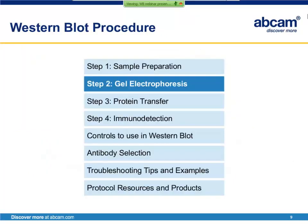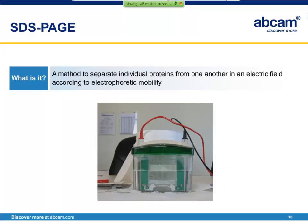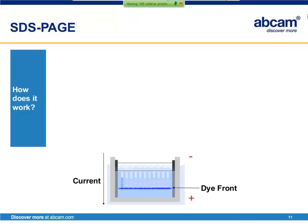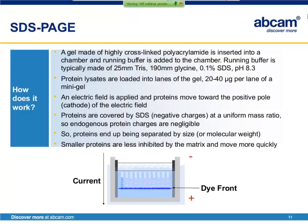Once the samples are properly prepared, they're ready for gel electrophoresis. Gel electrophoresis is used to separate proteins according to molecular weight — we're separating the proteins in an electric field, taking advantage of the fact that different sized proteins will move through a gel matrix at different rates. This image shows a typical apparatus used for gel electrophoresis. The type most commonly used in Western blotting is abbreviated SDS-PAGE, where SDS is the denaturing agent added to the buffer, and PAGE stands for polyacrylamide gel electrophoresis, as the gels are typically made of polymerized acrylamide.